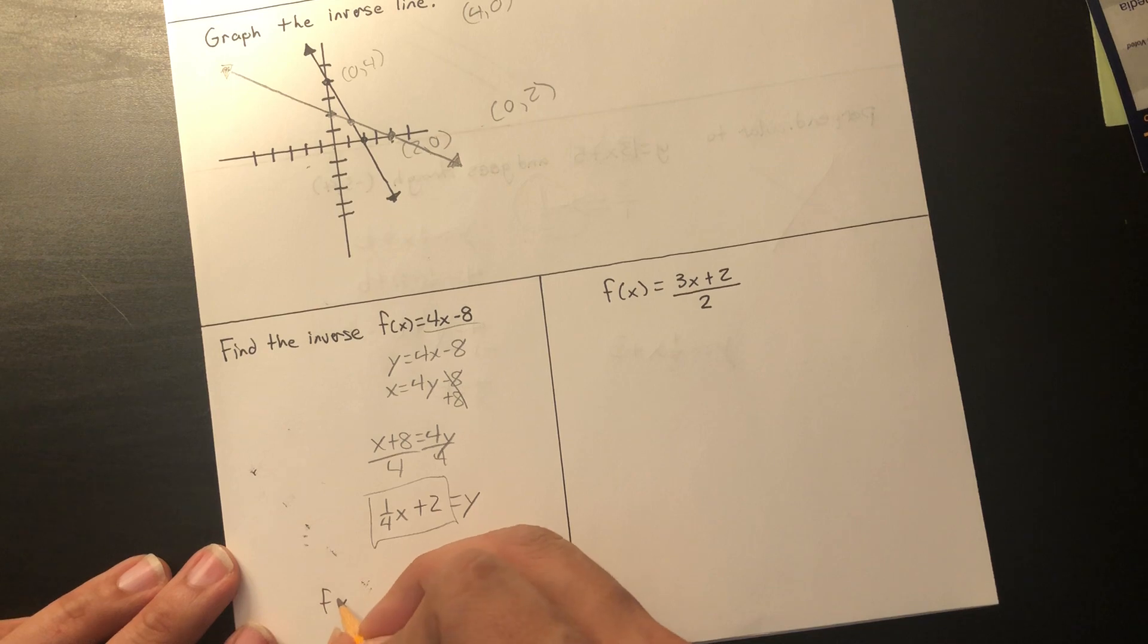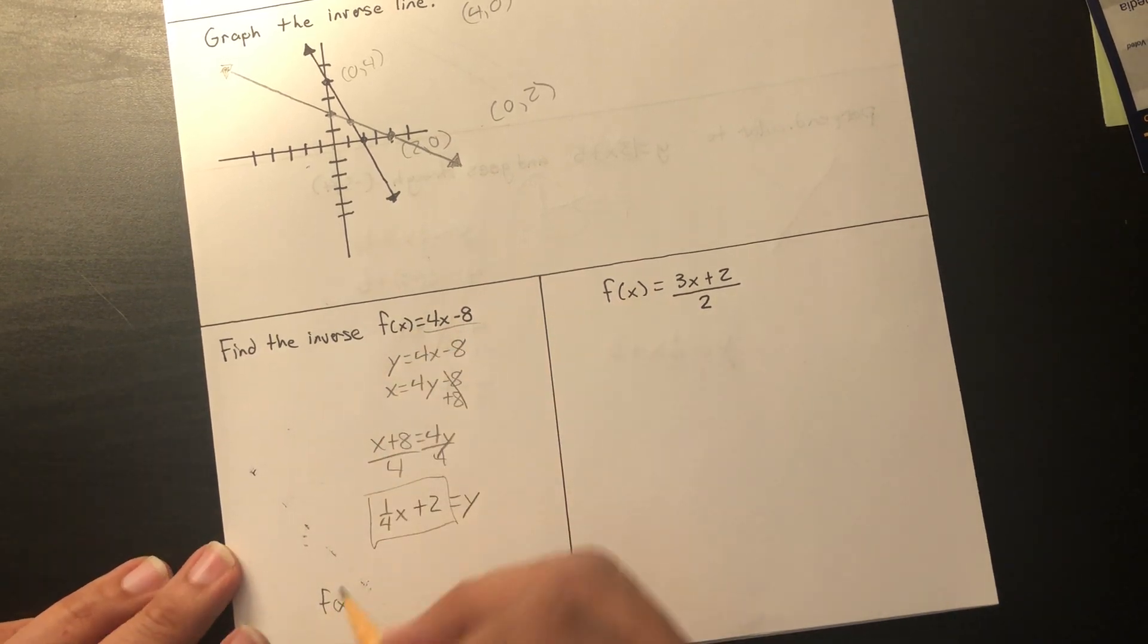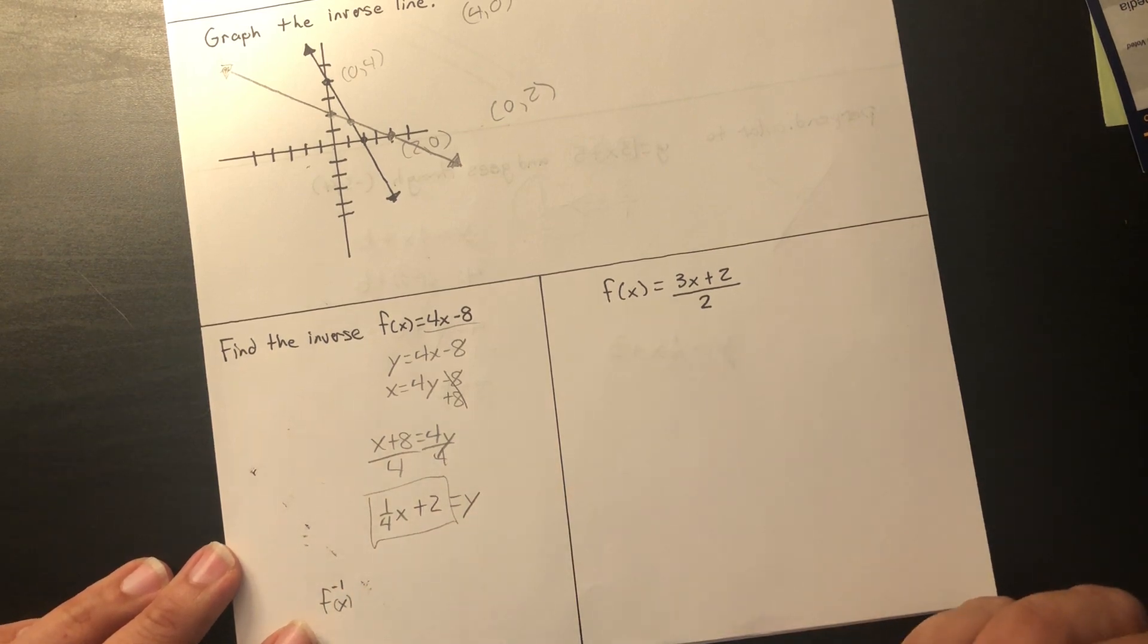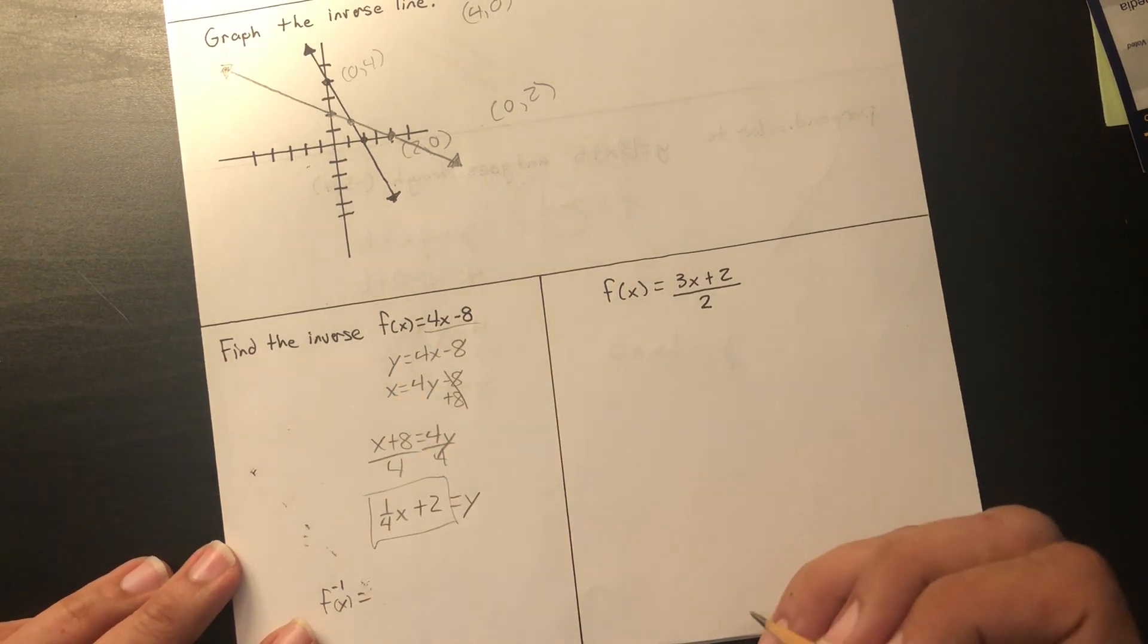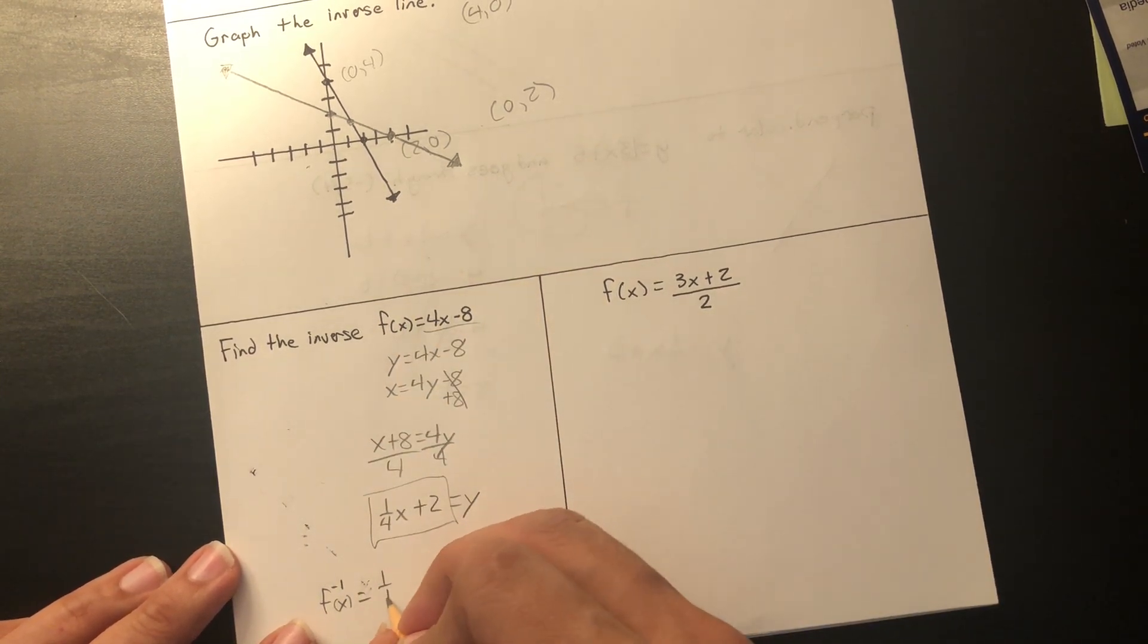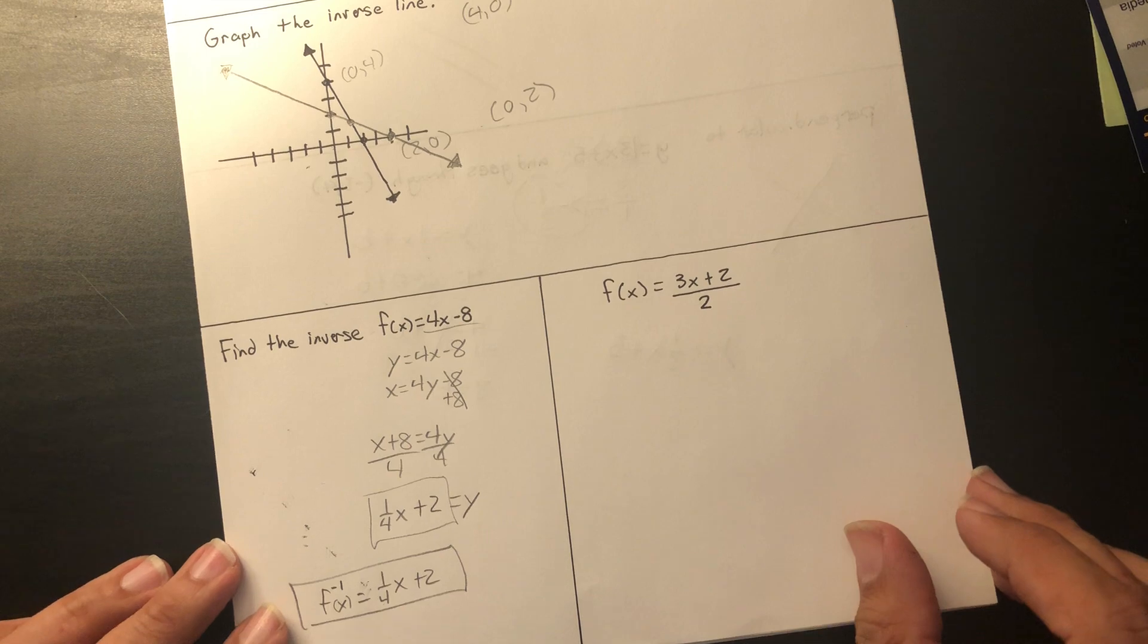Now I'm going to write it here. I can't write f of x because that one's f of x. So I have to show them that this is the inverse. The symbol is a negative 1 right here as an exponent for the f. This tells everybody that that was the original and this is the inverse. And now we get rid of that pesky y. This is our final solution.